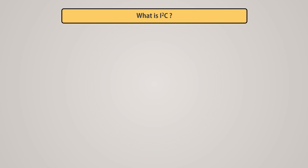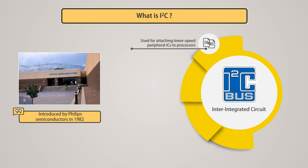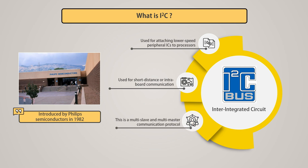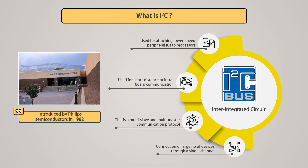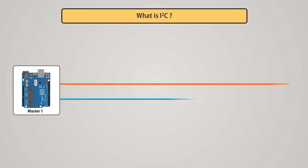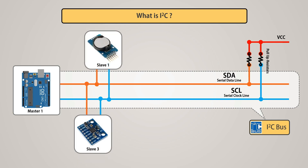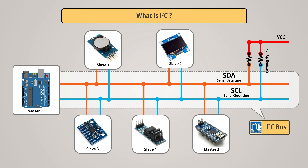The I2C stands for inter-integrated circuit. It was first introduced by Philips Semiconductors in 1982. It is widely used for attaching lower-speed peripheral ICs to processors and microcontrollers in short-distance or inter-board communication. This is a multi-slave and multi-master communication protocol that allows connecting multiple ICs to a single bus at a single instance of time. I2C uses one wire for data transmission called SDA or serial data line, and another for clock synchronization called SCL or serial clock line. It is commonly used to communicate with sensors, EPROMs, and other peripherals, making it a popular choice for a wide range of applications.